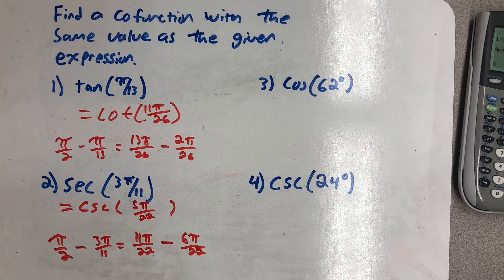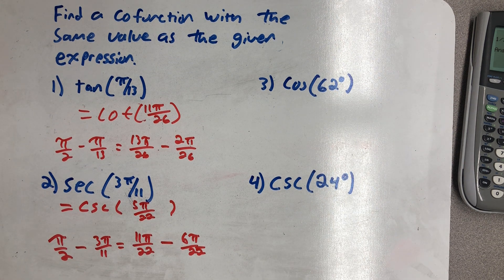The secant of 3π/11 is equal to the cosecant of 5π/22.